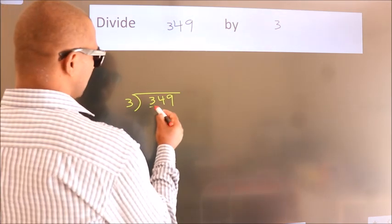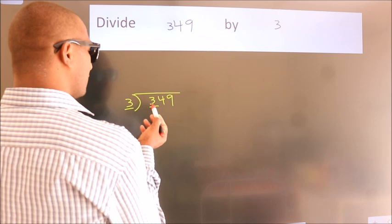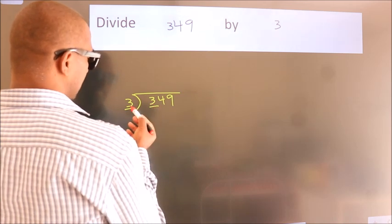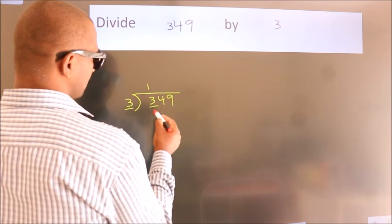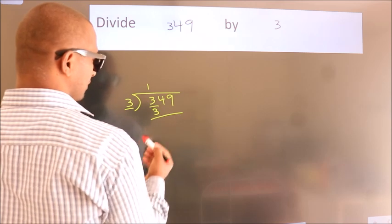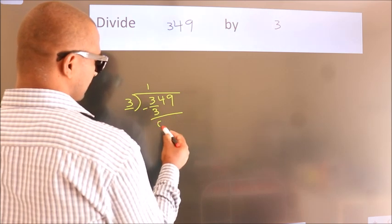here we have 3, here 3. When do we get 3? In 3 table, 3 times 1 is 3. Now, we should subtract, we get 0.